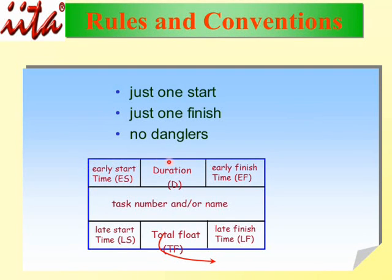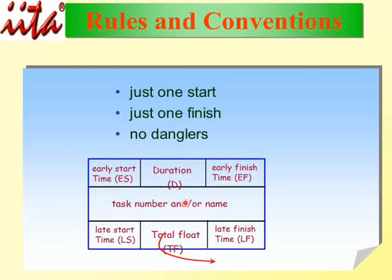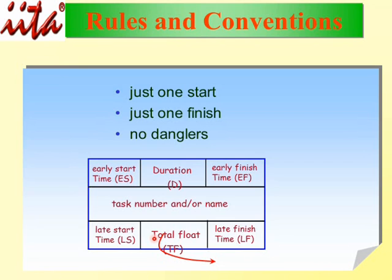The convention uses a rectangular box. On the top-left is the Early Start time, called ES. Next to that is the Duration, called D. The top-right corner is the Early Finish time, called EF. In the middle of the box is the task number or name. At the bottom-left is the Late Start time, called LS. Next to that is Total Float, called TF. On the bottom-right is the Late Finish time, called LF.